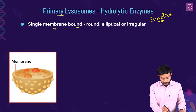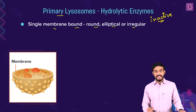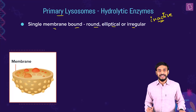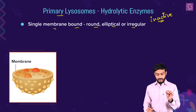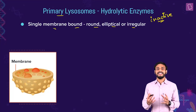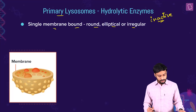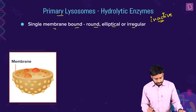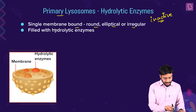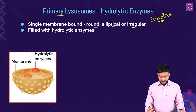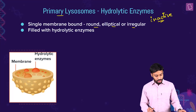Lysosomes can be round, elliptical, or irregular in shape. They are referred to as polymorphic because they exist in many physiological states in the cell. They are filled with hydrolytic enzymes.